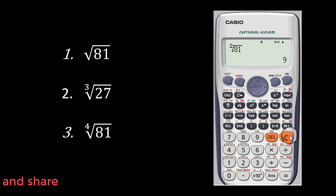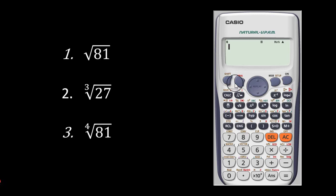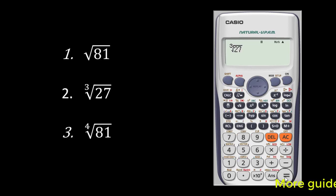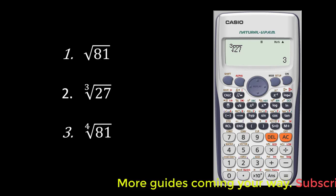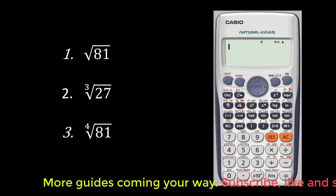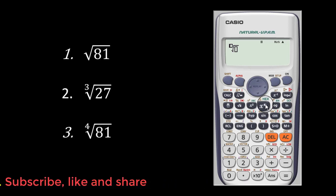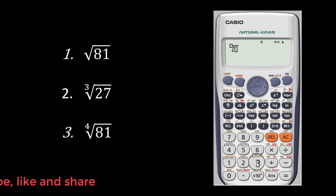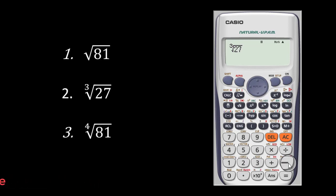Let's go to the second one: the cubic root of 27. You press the shift key and you press the radical key. The cubic root is already keyed in, so you type in 27 and press equal to — that gives you 3. In other words, the cubic root of 27 is 3. For the second option, press the shift key then press the power key, type 3 outside meaning you are looking for the cubic root, then scroll in and key in 27. Press equal to and it gives you 3.